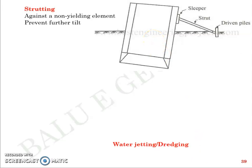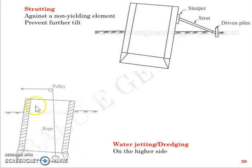Method number six is water jetting or dredging on the higher side. Using a pulley mechanism with a dredger, you dredge the soil from the higher side of the well to reduce the tilt. All these methods are quite intuitive — whenever something gets tilted, you can think of these approaches, and they apply to wells as well.